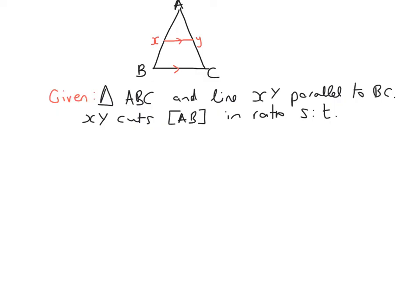So we're going to start off by drawing our diagram, and this is always linked to what we're given in the question. In this theorem, we're given a triangle ABC, and we're also given a line which is parallel to BC, so that's going to be the line XY, and it cuts the line AB in the ratio S to T.